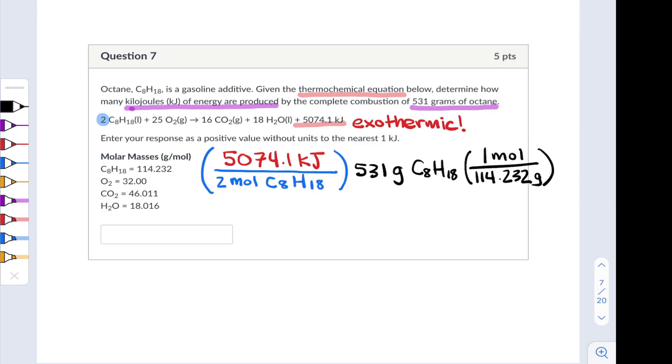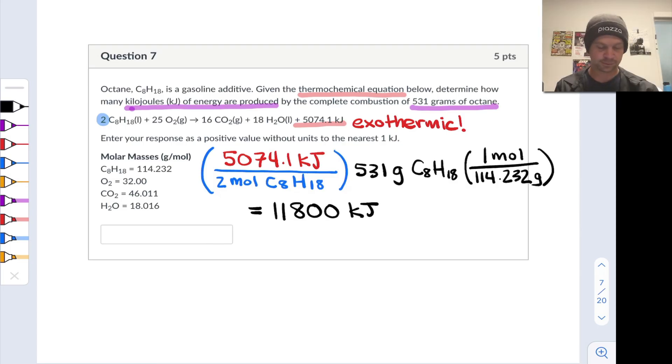At this point, we can plug and chug and calculate the heat released by this quantity of octane when it's fully combusted. When I plug in the numbers, I arrive at a final heat value of 11,800 or so kilojoules.